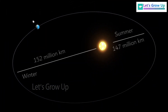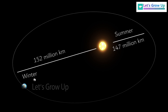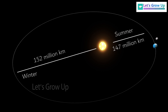But nowadays, many people believe that the weather changes because the earth is closer to the sun in summer and farther from the sun in winter. Is it true? You can write your comment below.